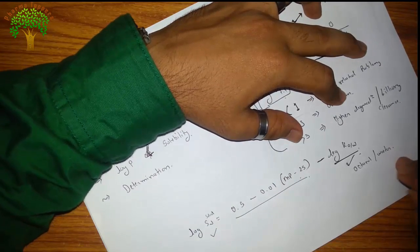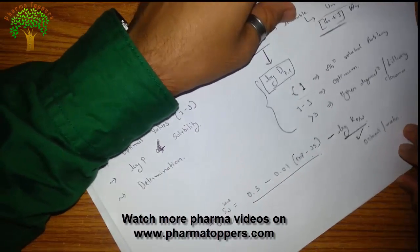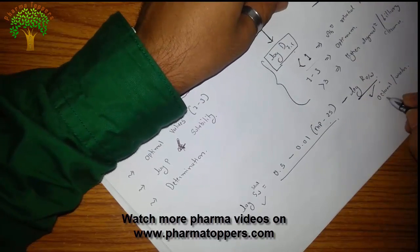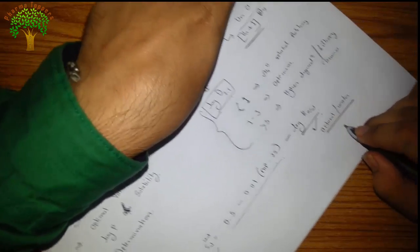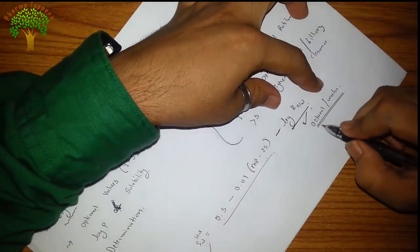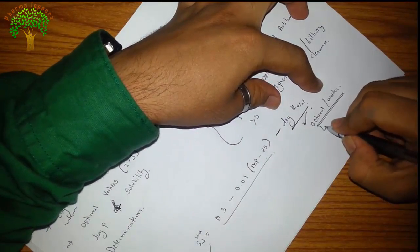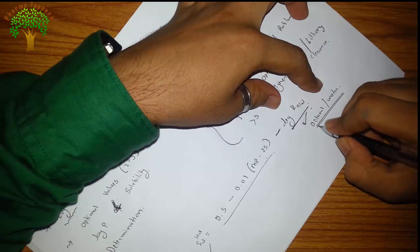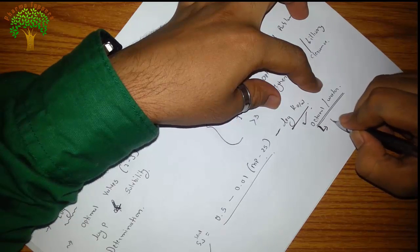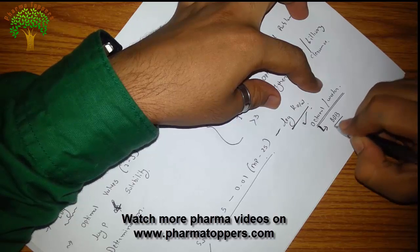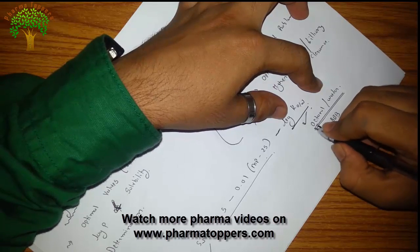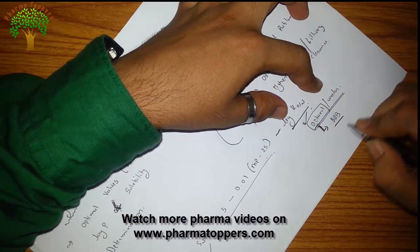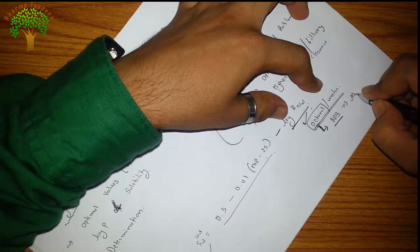I would like to tell you that generally octanol water is used, but in some cases, if you are going for the permeability of BBB, we know that the BBB is more lipophilic. So in such cases, instead of octanol, we can go for a more lipophilic solvent to get an idea for the passing of the drug molecule from BBB.